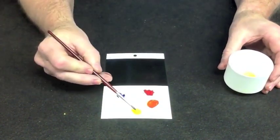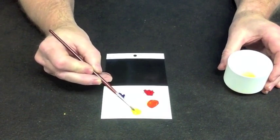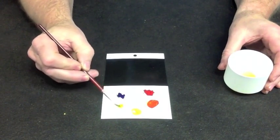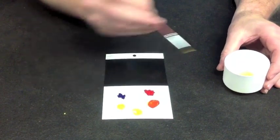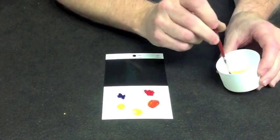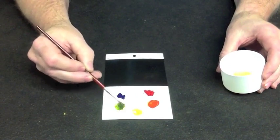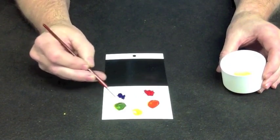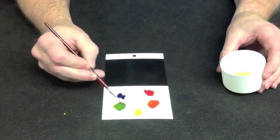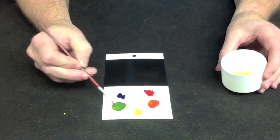Now we're going to do the same thing with the blue and the yellow. Take some of the yellow. Pick up a little bit of the blue. We have green.